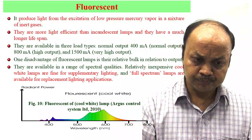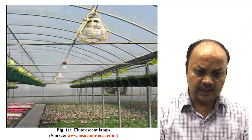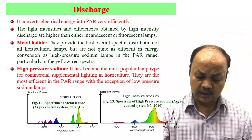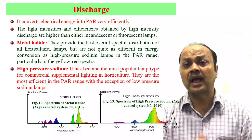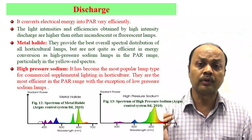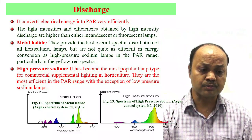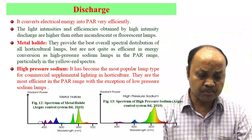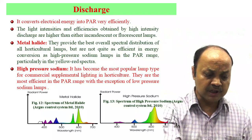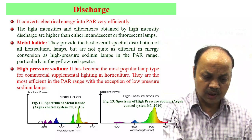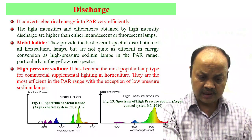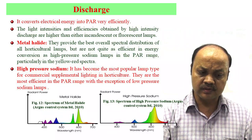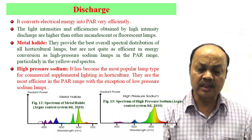This sodium lamp is more efficient in comparison to both incandescent and fluorescent lamps. Different types of discharge lamps work on the discharge principle — metal halide and high pressure sodium lamps. In metal halide, different peaks exist for yellow, green, and other colors between 400 to 700 nm. High pressure sodium has become the most popular lamp type for commercial supplemental lighting in horticulture, as they are the most efficient in the PAR range.